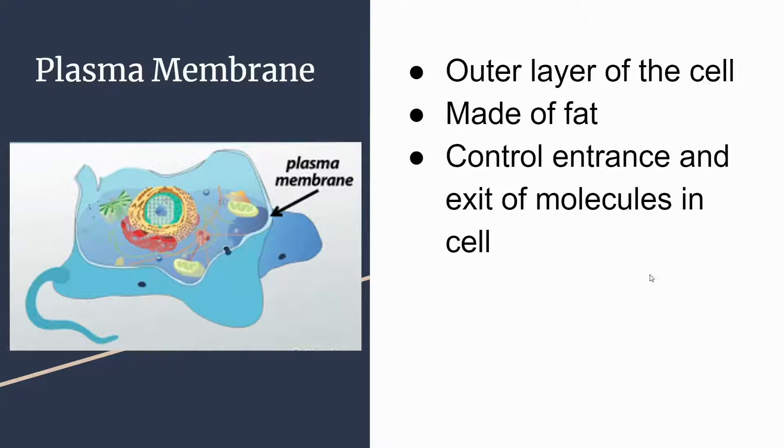Starting off with the plasma membrane, the plasma membrane is the outer layer of the cell, and it is made up of a type of fat called a lipid. Its main purpose is to allow certain molecules to come into and out of the cell, while keeping everything inside the cell from going out as well.